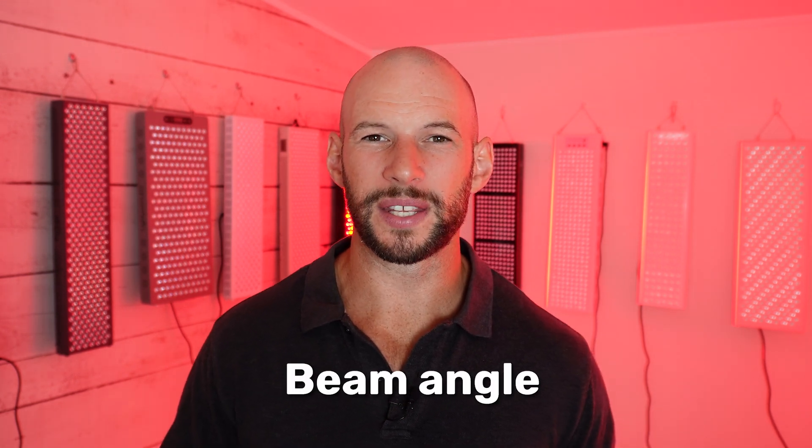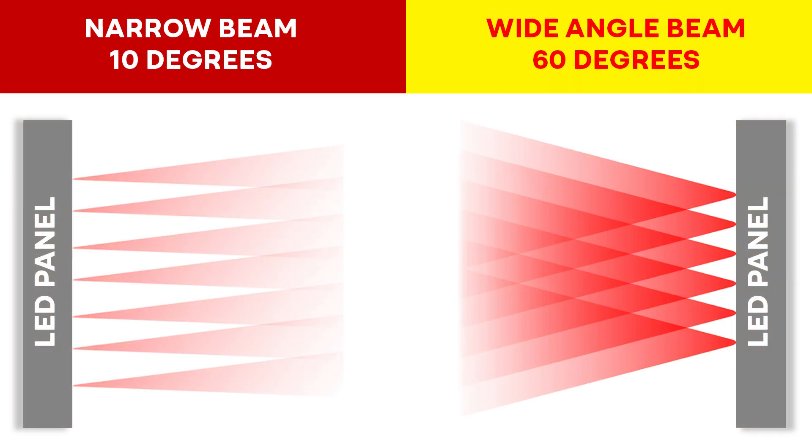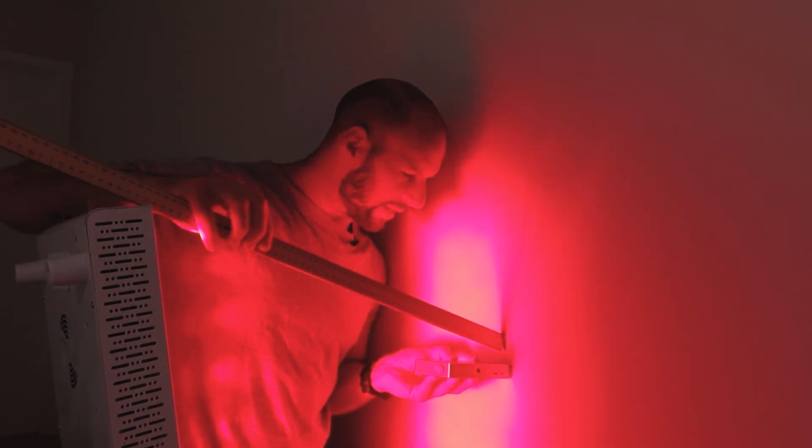What about beam angle? This used to be heavily marketed, though lately it's less common — which is a good thing, because in testing the numbers on the box didn't really mean much. Companies would claim their LEDs have a beam angle of 30, 60, or 90 degrees, referring to the angle at which light spreads from the LED. Testing showed those figures didn't really match reality, which may be why it's talked about less now.